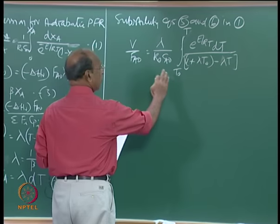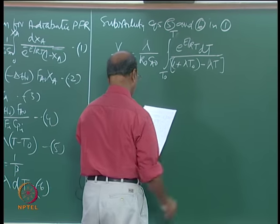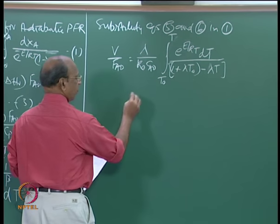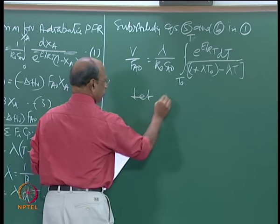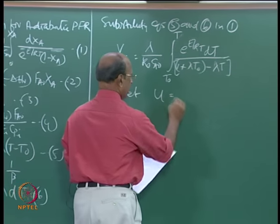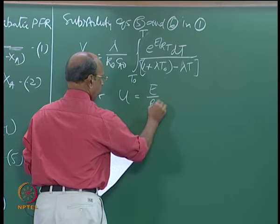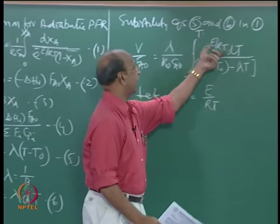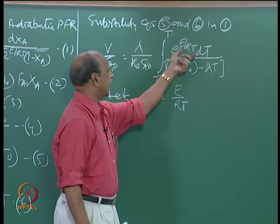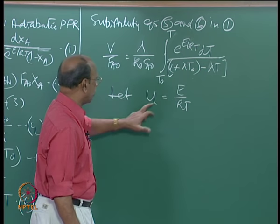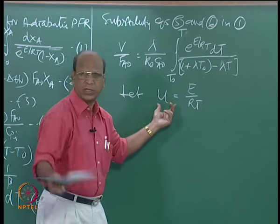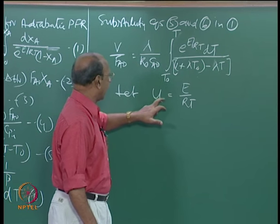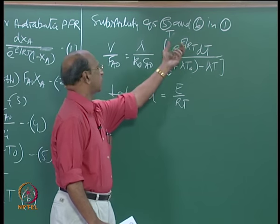To convert this into the exponential integral form, we make the substitution u = E/(R*T), because the term E/RT appears directly in the integrand. This is done so we can match the standard definition of exponential integrals.